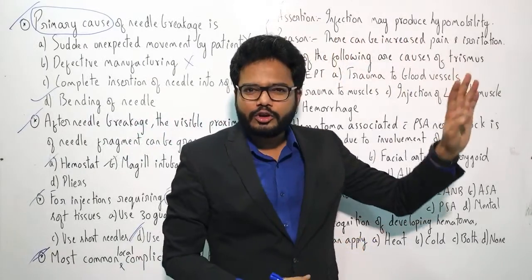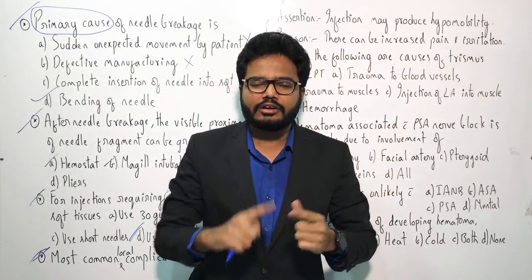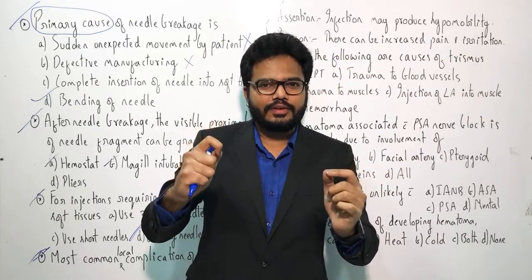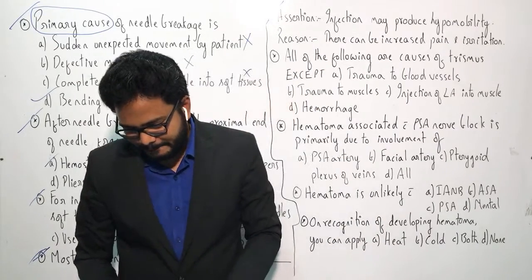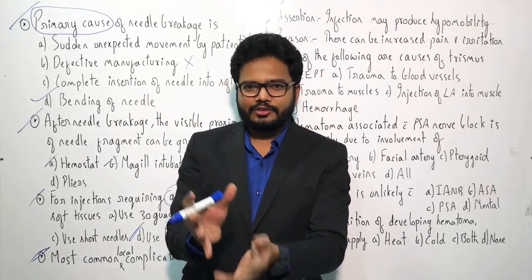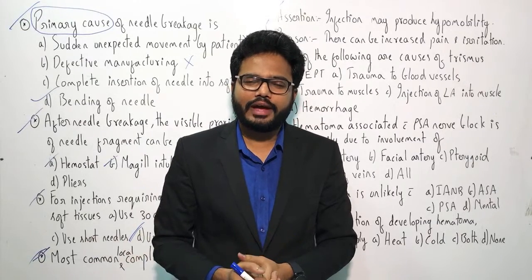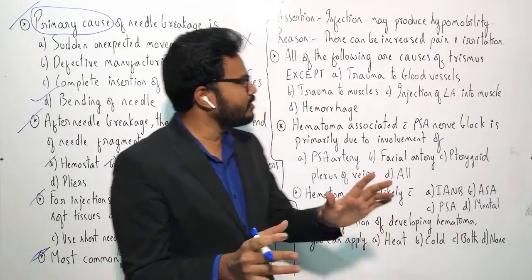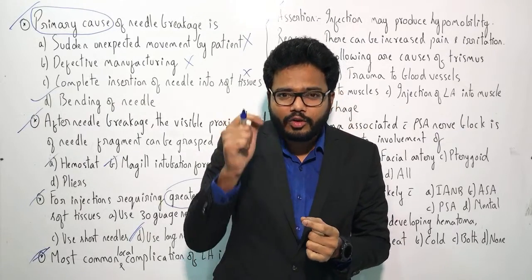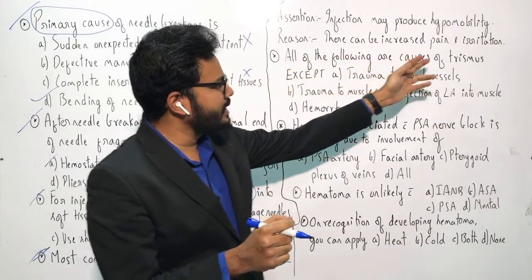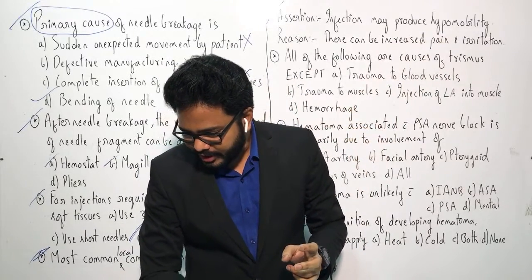Assertion and reason question. Assertion: infection may produce hypomobility. Reason: there can be increased pain and irritation. With infection, the host responds with inflammation — there can be pain from inflammatory mediators and swelling from tissue factors, leading to scarring and fibrosis. Low-grade infection is mentioned as one cause of trismus. Increased pain and irritation limits movement. Both assertion and reason are true, and reason justifies the assertion.